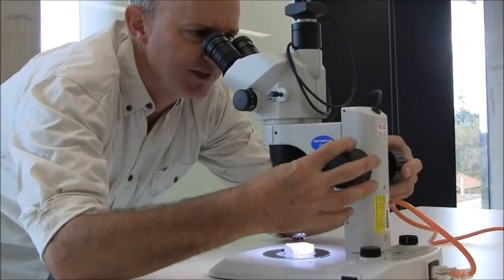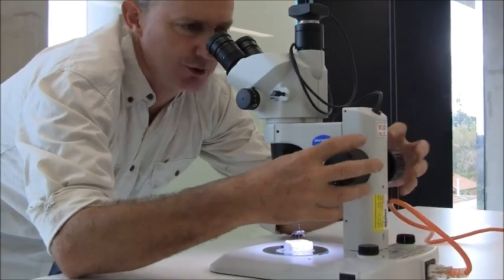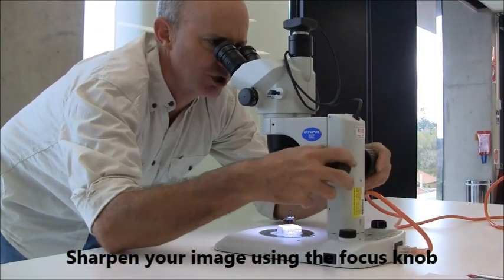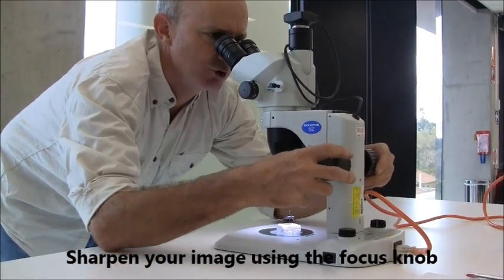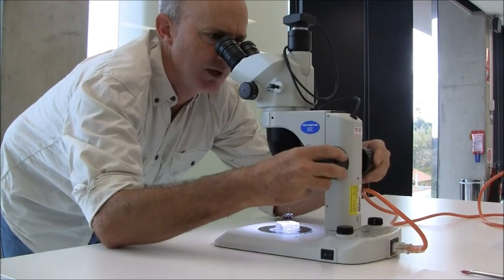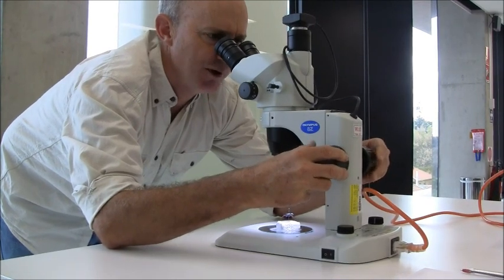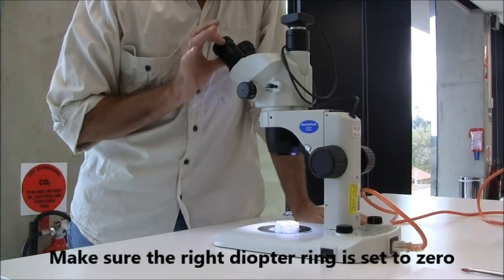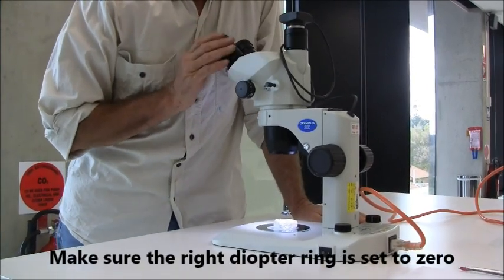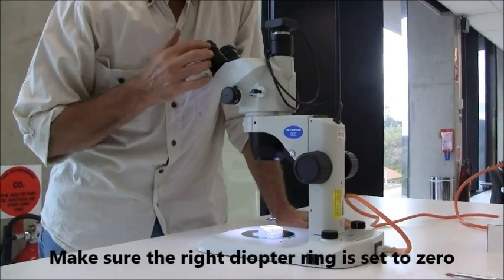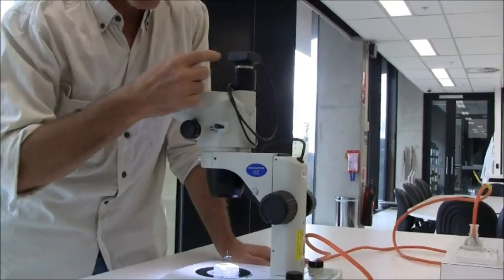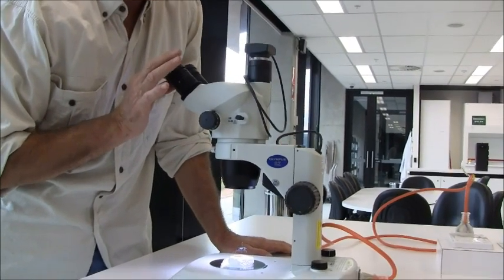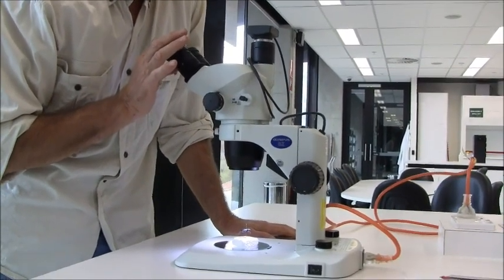Then sharpen the focus using the focus knob on the base of the microscope to get a nice sharp image. You might have to move it quite a bit. Now we're going to adjust it for both eyes. The right eyepiece is set at zero and left at zero. The technicians have adjusted the camera focus to this lens by positioning it at zero.